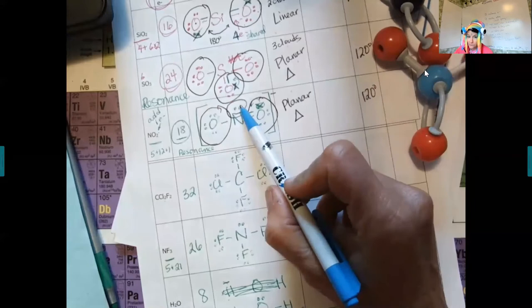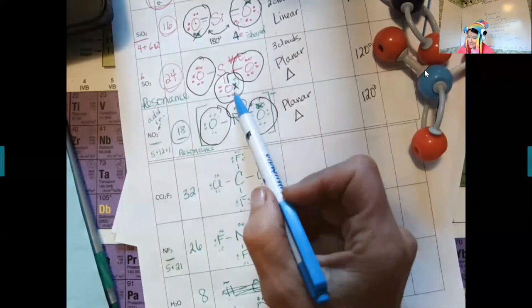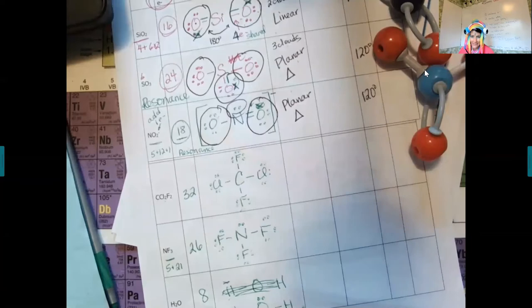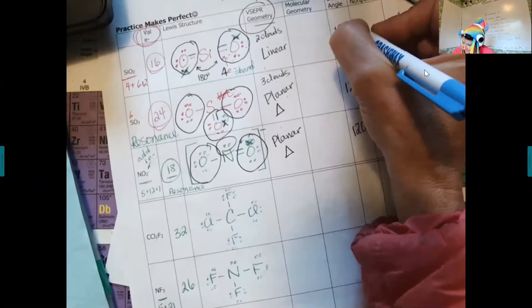A lone pair on the center gets its own space — it actually takes up more space than the bonded oxygen. So this is actually about 119 degrees, but let's go with 120. So 180 for linear and 120 for trigonal planar.